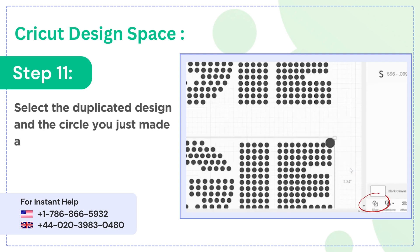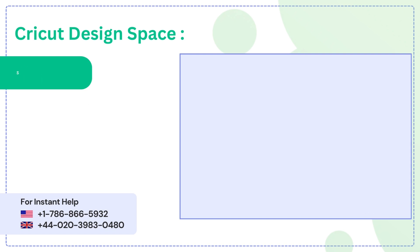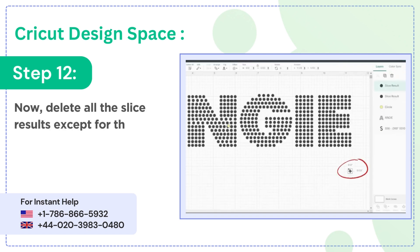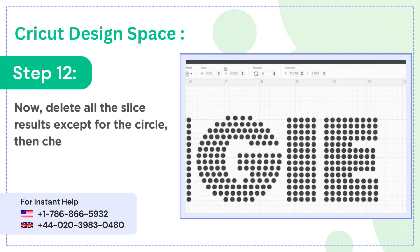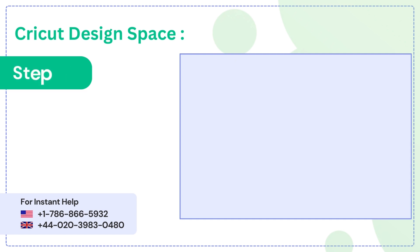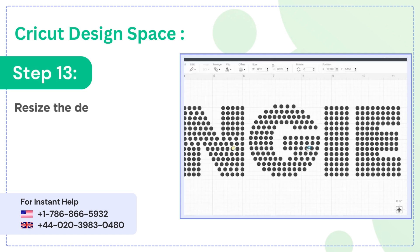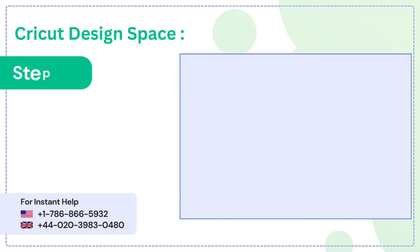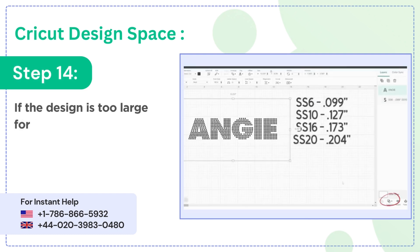Step 10: place the circle on the corner of the design covering one dot. Step 11: select the duplicated design and the circle you just made and click slice. Step 12: now delete all the slice results except for the circle, then check the size of the circle from the toolbar.